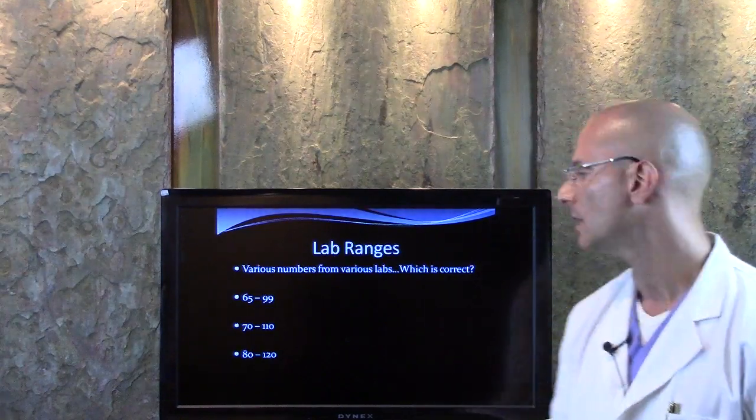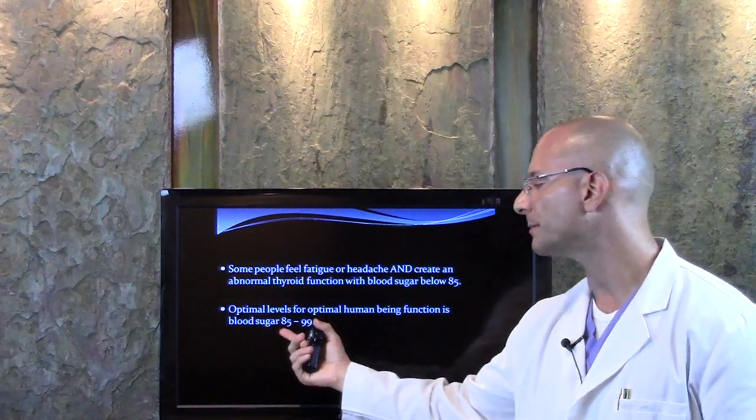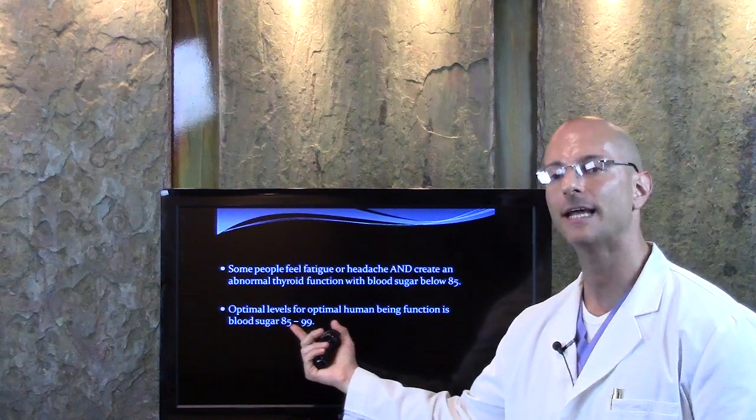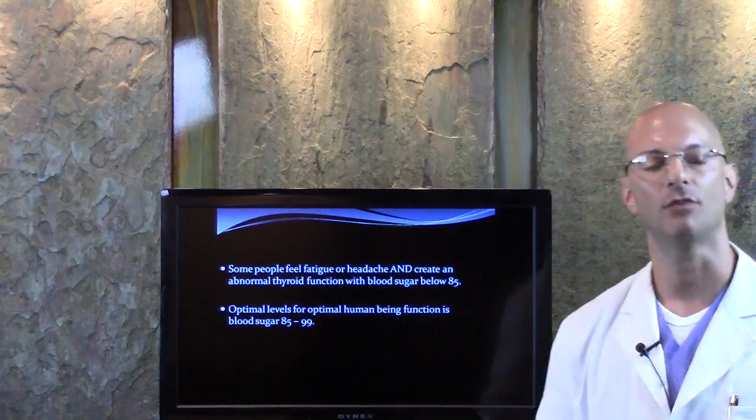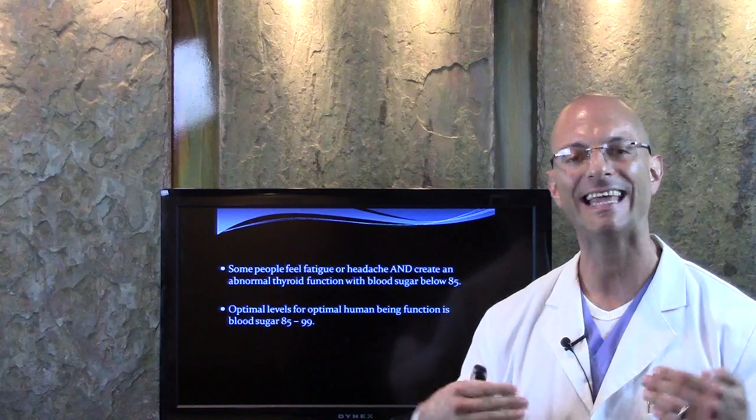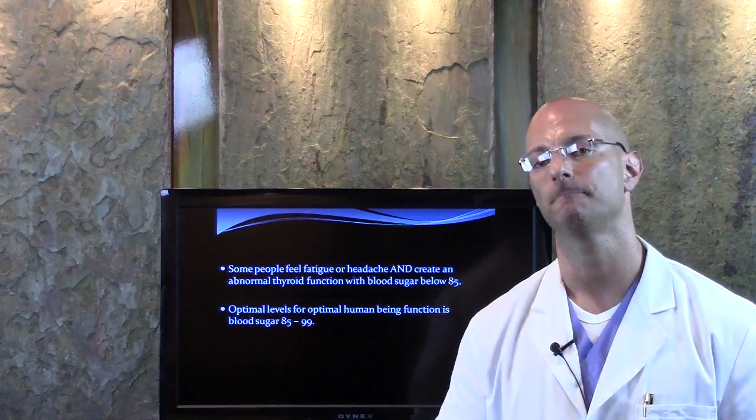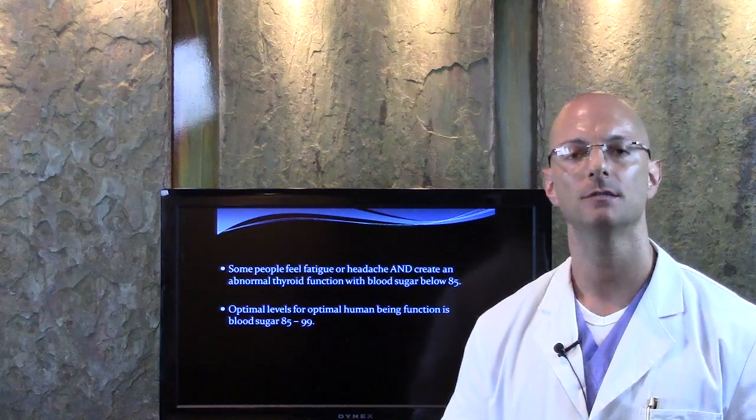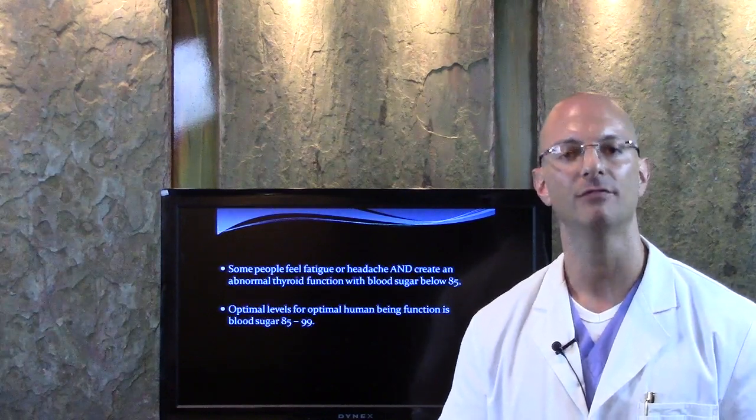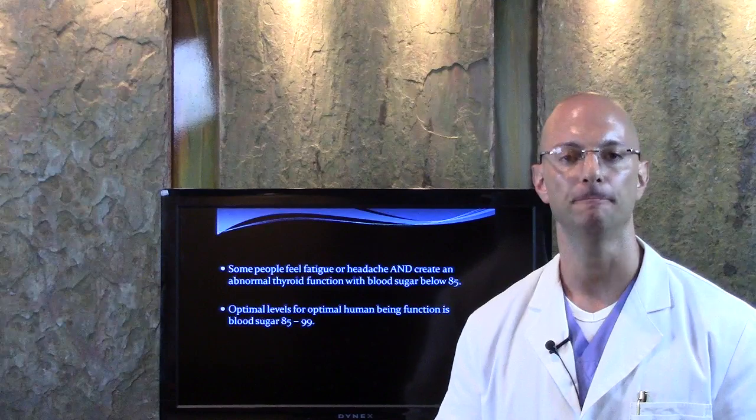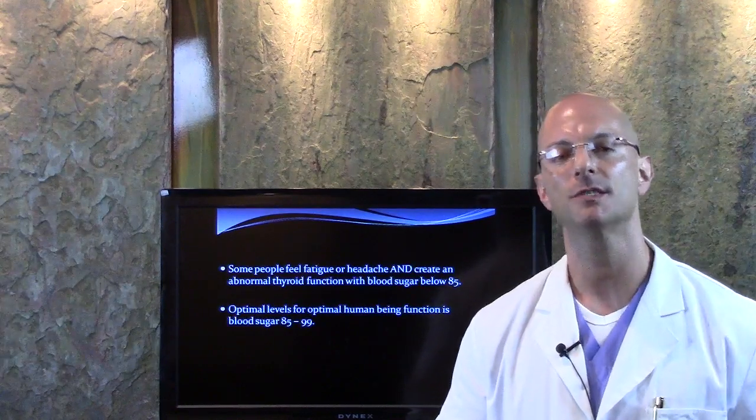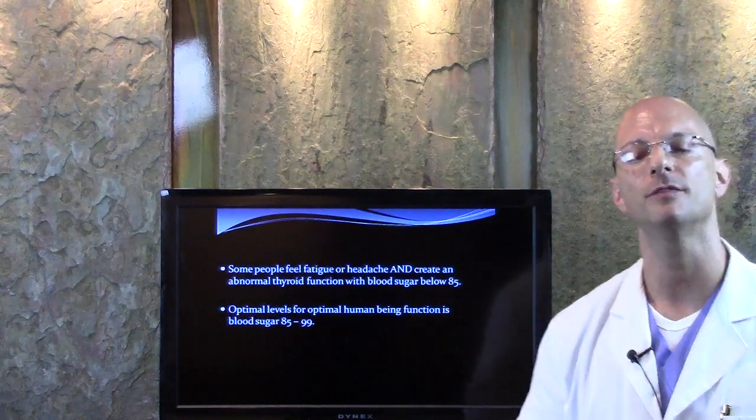So when we're talking about blood sugars, we want that blood sugar range for optimal human being function between 85 and 99. And if it falls below 85 or above 99, a cascade of events, reactions take place and we don't need those reactions if we want to be healthy and pain free and disease free. Thank you for watching this video. I look forward to sharing more with you in the future.